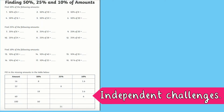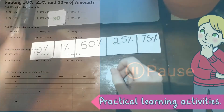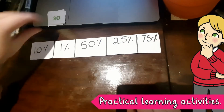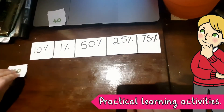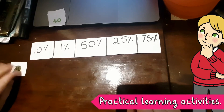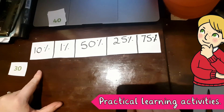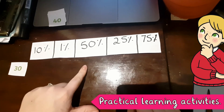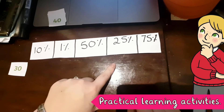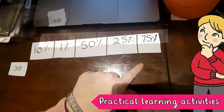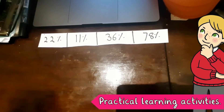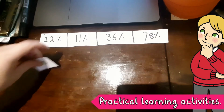You can either print it off the Twinkle website or just check it out here on the screen. Pick a card at random and see if you can find 10%, 1%, 50%, 25%, and 75%. Once you've done those percentages, challenge yourself to do these ones.